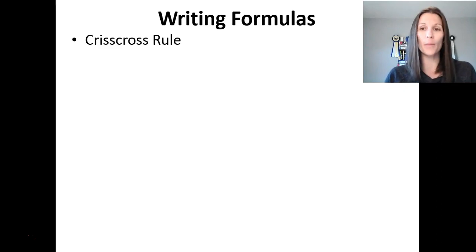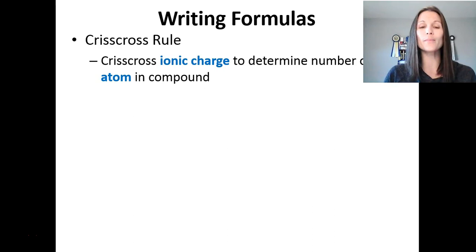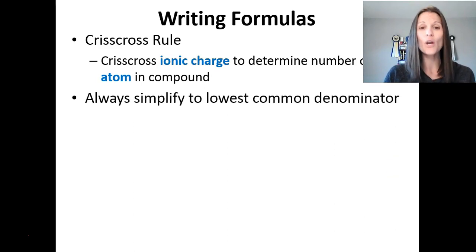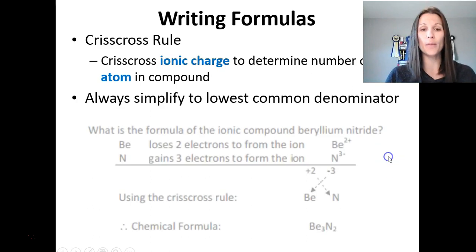How is it that we come up with the formulas? The basis of that is the crisscross rule. The crisscross rule simplifies the fact that you can take the ionic charge to determine the number of each atom in a compound. Once you do the crisscross rule, you always have to simplify to the lowest common denominator.